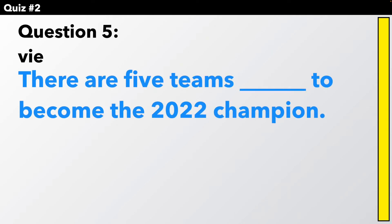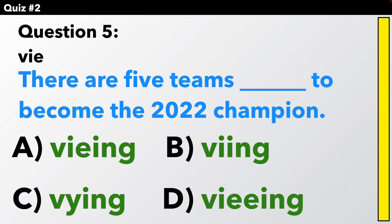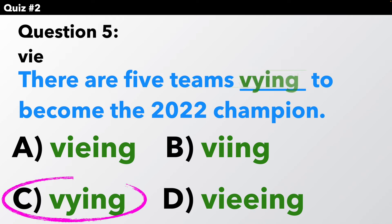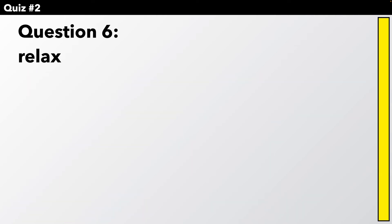Number five. Vie. There are five teams vying to become the 2022 champion. How should we spell it? Yes, these are becoming a little more tricky. This time we need to change that I-E to a Y and then add I-N-G.